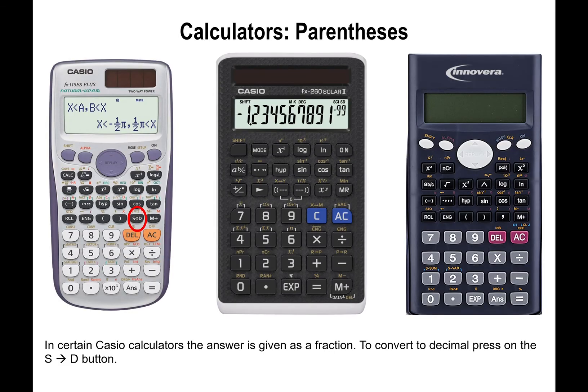Another thing: some calculators have this button S to D. The answers you obtain from your calculator may look funky. Some of them may look like fractions. If you want the actual value as opposed to the fraction, press on this button S to D. This tells the calculator to exit out of the fraction format and go directly to decimal. Just be aware of that button. If you end up with an answer that is a fraction, press S to D, and that will convert your fraction to a decimal number.